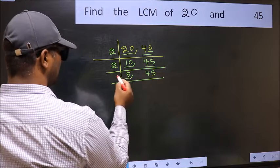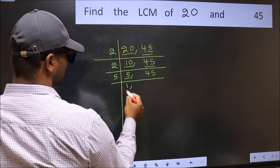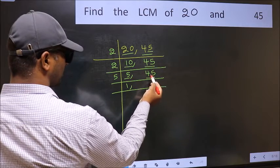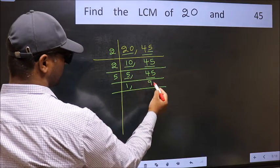Now here we have 5. 5 is a prime number, so 5 once 5. The other number 45. When do we get 45 in 5 table? 5 nines 45.